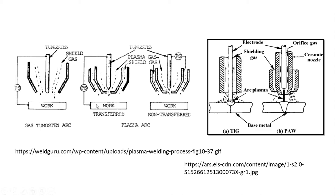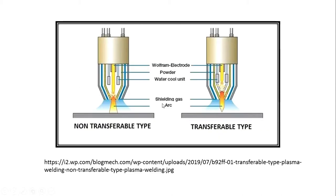There are two types of modes in plasma welding: transferred and non-transferred. In transferred mode, the circuit is closed between the workpiece and the electrode. In non-transferred mode, the circuit is closed between the tungsten electrode and the side of the nozzle — it does not involve the workpiece and will not produce as much heat. The torch used most of the time is cooled by water.